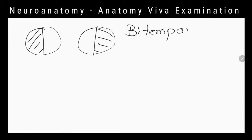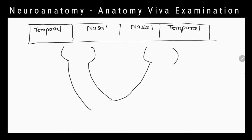If a driver can't see the vehicles on his right and left sides, what could be the defect in his eye field? Bitemporal hemianopia. How can a tumor in hypophysial fossa cause this condition?